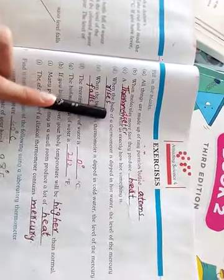When the bulb of a thermometer is dipped in hot water, the level of mercury rises.